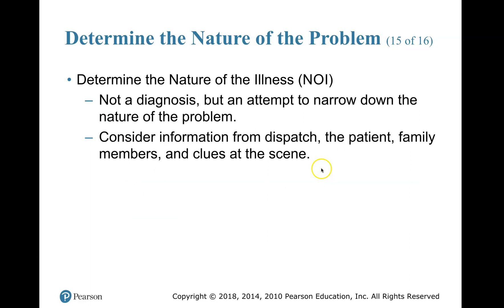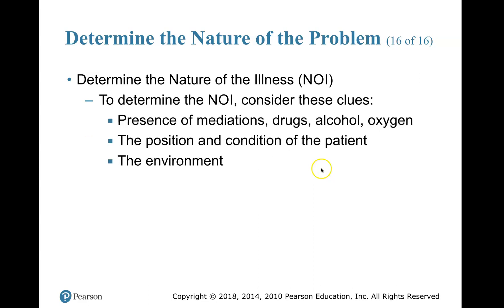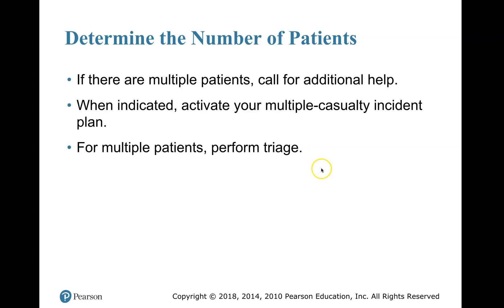The nature of illness is not a diagnosis — for medical patients not involved in trauma, it is an attempt to narrow down the nature of the problem. Consider information from dispatch, the patient, family members, and clues at the scene such as medications, drugs, alcohol, oxygen present, the patient's position and condition, and the environment. Determine the number of patients — if there are multiple patients, call for additional help. When indicated, activate your multiple casualty incident plan and perform triage.